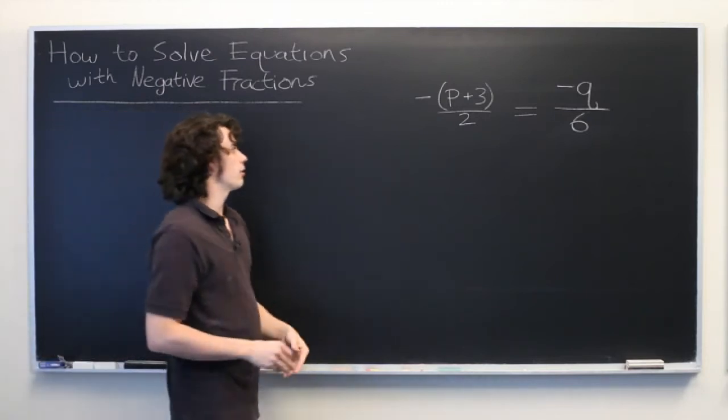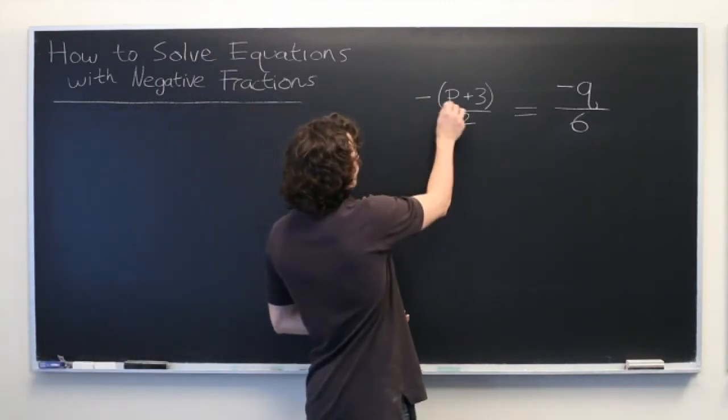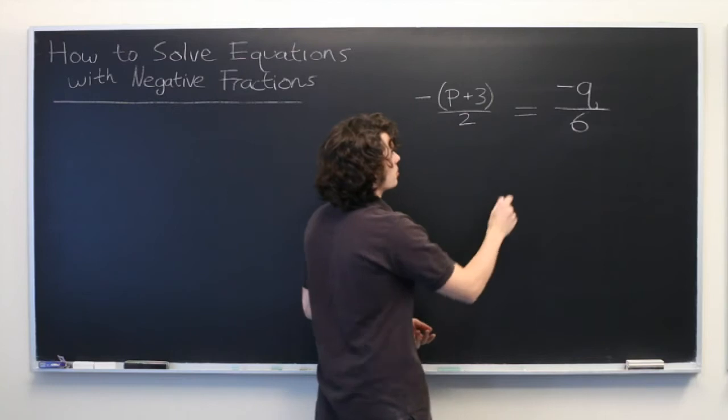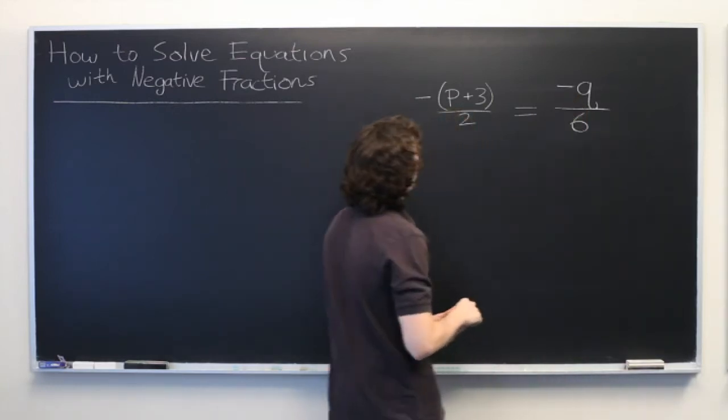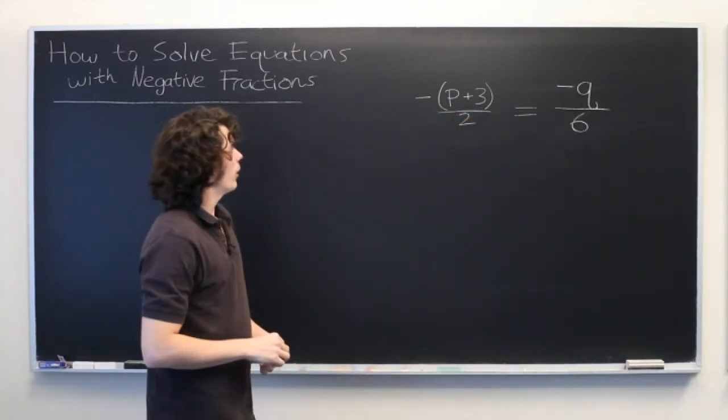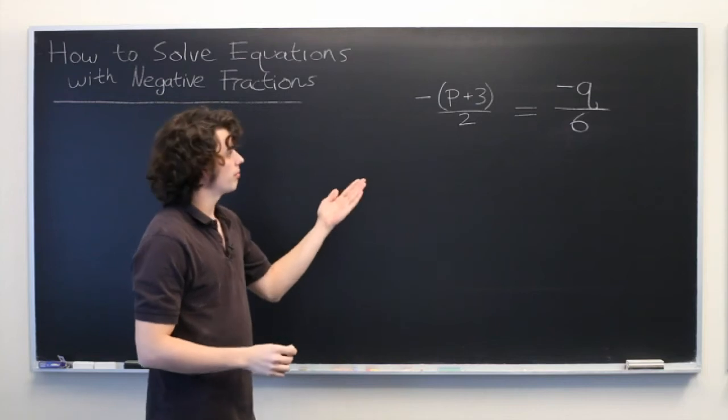Here we have a nasty looking equation. We've got negative p plus 3 over 2 equals negative q over 6. And what we want here is to solve for p as a function of q.